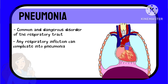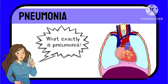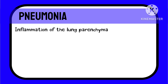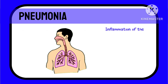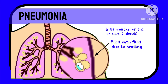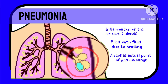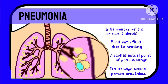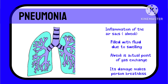But before that, what exactly is pneumonia? By definition, pneumonia is the inflammation of the lung parenchyma, which means there is inflammation of the air sacs, or what we call the alveoli. They become filled with fluid due to this swelling. Since the alveoli are the point where gas exchange takes place, when they become filled with fluid, the person feels breathless as air enters the respiratory tract but is not being used.